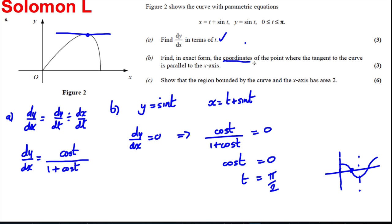But we want the coordinates. So we want the x and the y value. So therefore, y is equal to sin of pi by 2. And sin of pi by 2 is 1. And x is equal to pi by 2 plus sin of pi by 2, which is that. So the coordinates of this point here are pi by 2 plus 1 and 1. So here the coordinates are pi by 2 plus 1 and 1. And we're done for the next part.